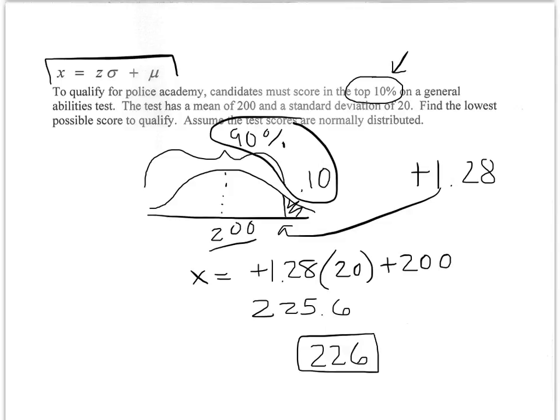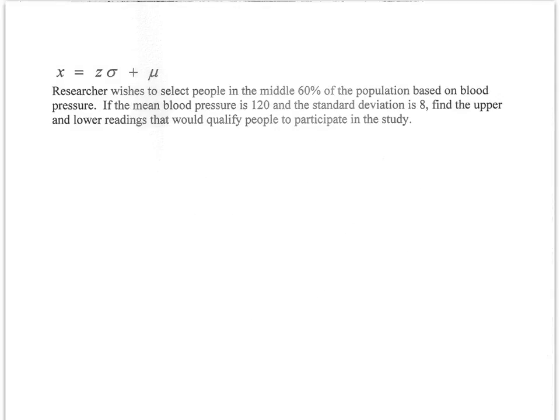One more example. In this example we're talking about the middle 60 percent. The normal distribution is symmetric about the mean, so we're talking about the middle 60 percent. We're going from here to here. It's got to be an even split, 30 percent here and 30 percent here. So the area from here to here is going to be 0.3 and the same on the other side, which means the area here is 0.2.